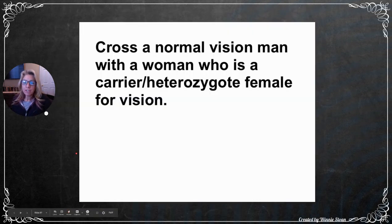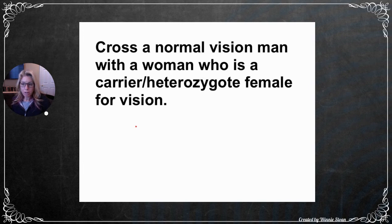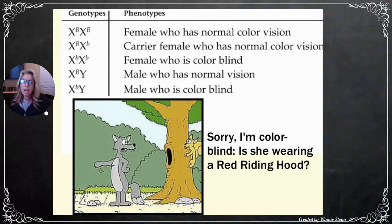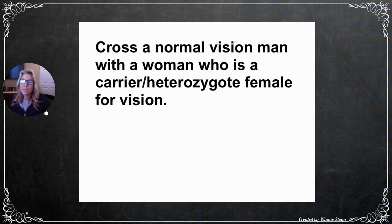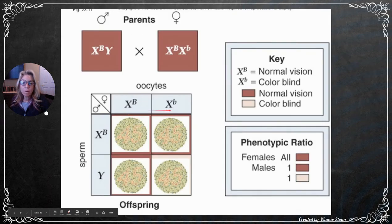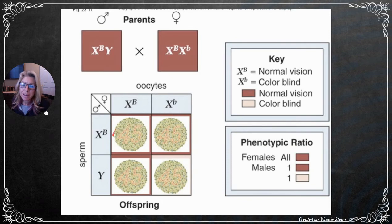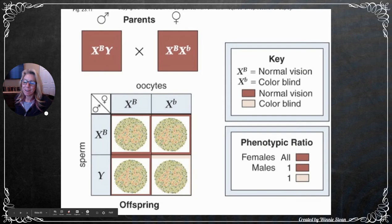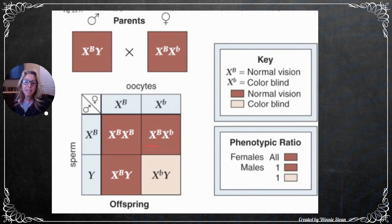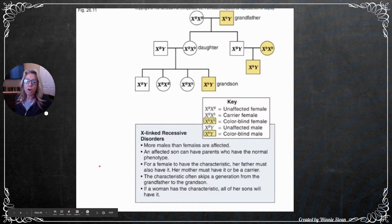Practice cross: normal vision man (X^B Y) with a carrier woman (X^B X^b). The Punnett square gives four outcomes: a normal female (X^B X^B), a carrier female (X^B X^b), a normal male (X^B Y), and a colorblind male (X^b Y). The Ishihara plate shown in the video contains the number 45, which colorblind individuals would have difficulty seeing.